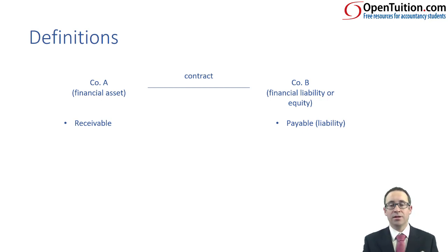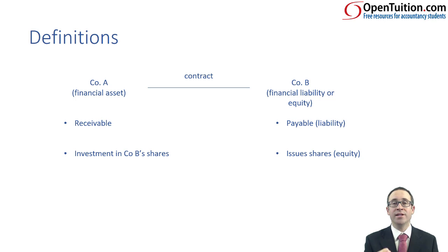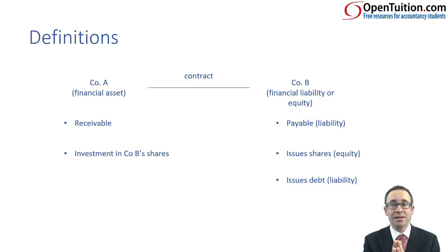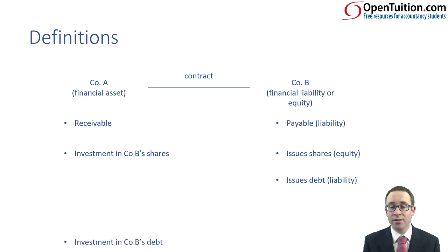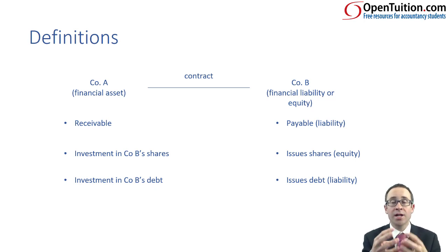If company B has issued shares, company A will have acquired them. Company A has an investment in company B's shares — an investment in the equity of another entity — which by definition is a financial asset. Company B could also raise finance through debt. The issue of debt gives rise to a financial liability, because it is a contractual obligation to pay cash. In company A's books, if company A has bought that debt, it has a contractual right to receive the cash, and therefore by definition that is also a financial asset.